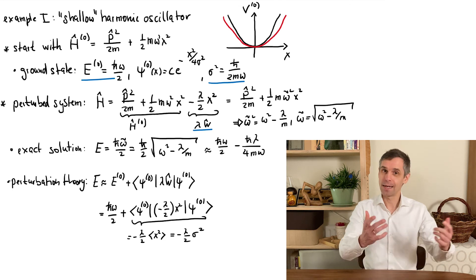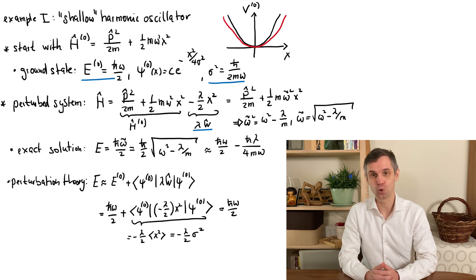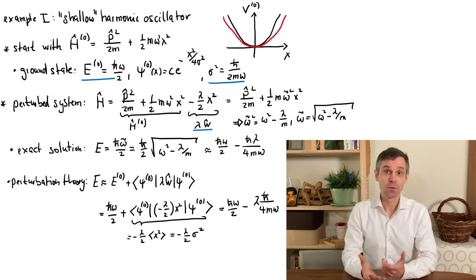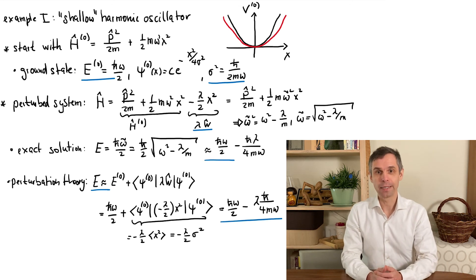When we collect our results, we see that the new ground state energy is therefore given by the ground state energy of the original quantum system, h-bar omega divided by 2, and a correction which is minus h-bar lambda divided by 4m omega, and comes from our main result. So as you can see, this recovers the approximation that we obtained from the Taylor expansion of our exact result.